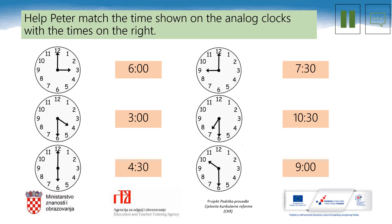Shall we check the answers together? Here we go. What is the time? It is 3 o'clock. That's right. What about the next one? You're right — half past 4. And the next one? It's a piece of cake for you. That's right — it's 6 o'clock. Let's move on.